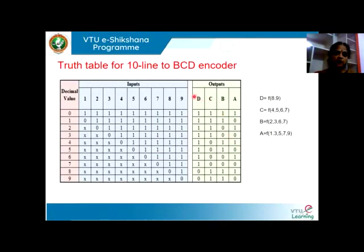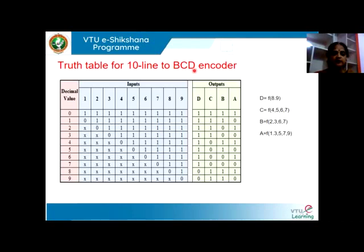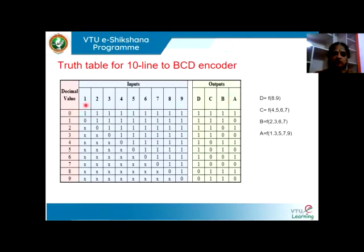Now let us see how to design a 10-line to BCD encoder. While designing the decoder, we have seen how to design a BCD to 10-line decoder. Now we are understanding how to design a 10-line to BCD encoder. When we say 10-line, the number of inputs is 10 and the outputs are BCD. Here is the truth table which tells the number of inputs, number of outputs, and the values for each of the decimal values.